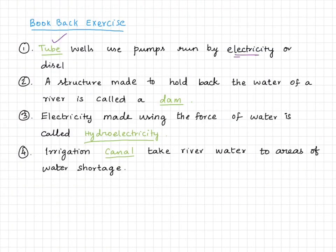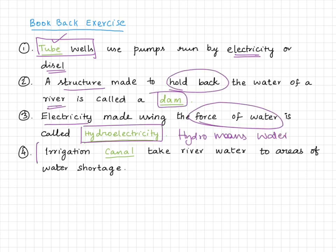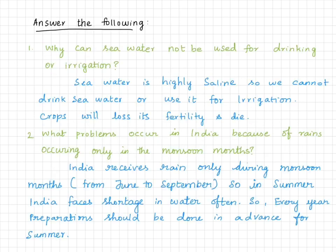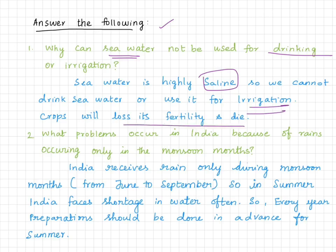Finally, here we come to the book back exercise. These are the one-word answers, and these are the answer-the-following questions. Question 1: why can seawater not be used for drinking and irrigation? The answer is seawater is highly saline, so we cannot drink it or use it for irrigation — crops will lose their fertility and die.